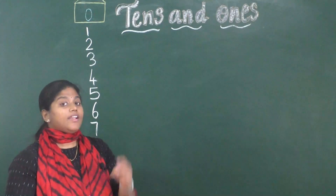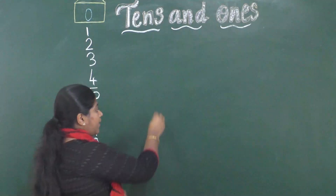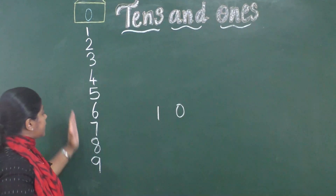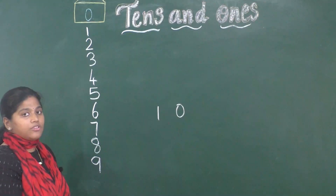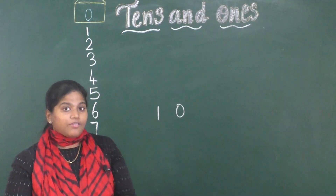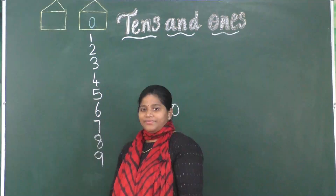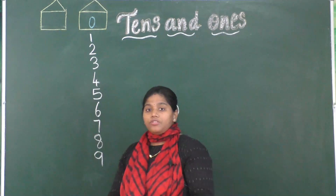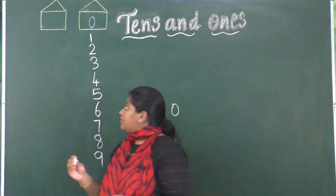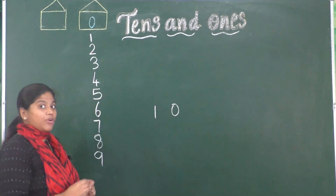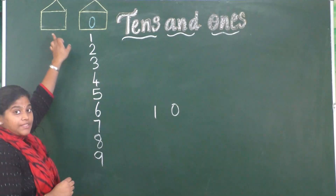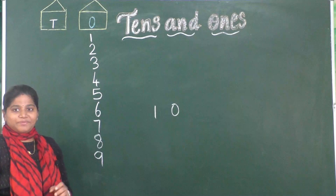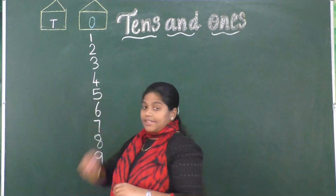How many digits are there in 10? There are two digits: 1 and 0. But we can write only one digit in the ones house. For that we have to make another house. Here ma'am has made another house, and we have to give it the name tens. For that we can represent the house with the letter T. So letter T represents tens.